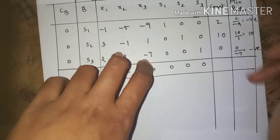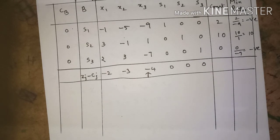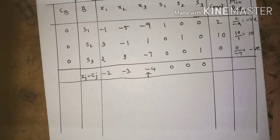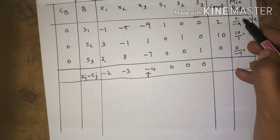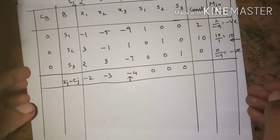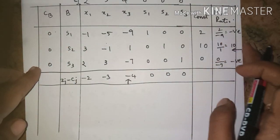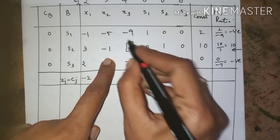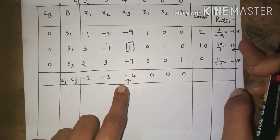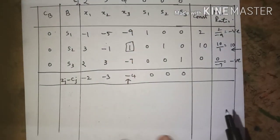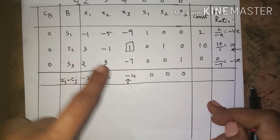The ratios are: 2/-9 is negative, 10/1 is 10, and 0/-7 is negative. When calculating the minimum ratio, we ignore negative values and infinity — only positive values and zeros are considered. The only positive value is 10, so we choose the second row. S2 is the leaving variable and x3 is the entering variable.